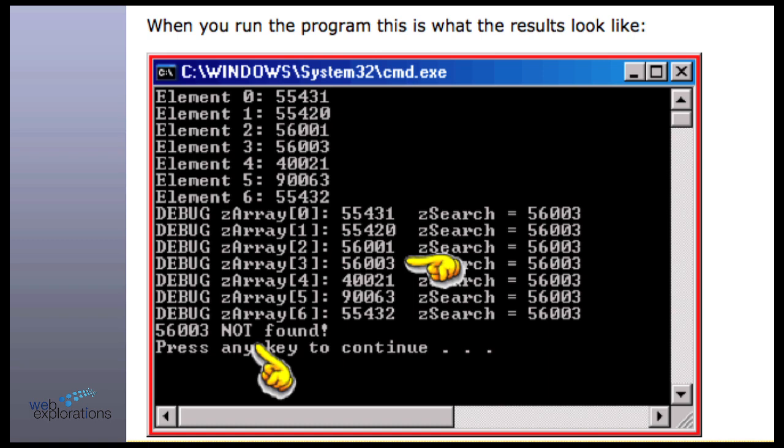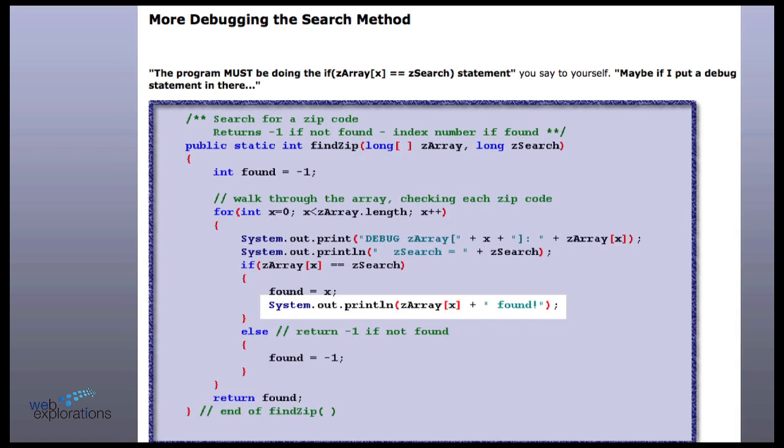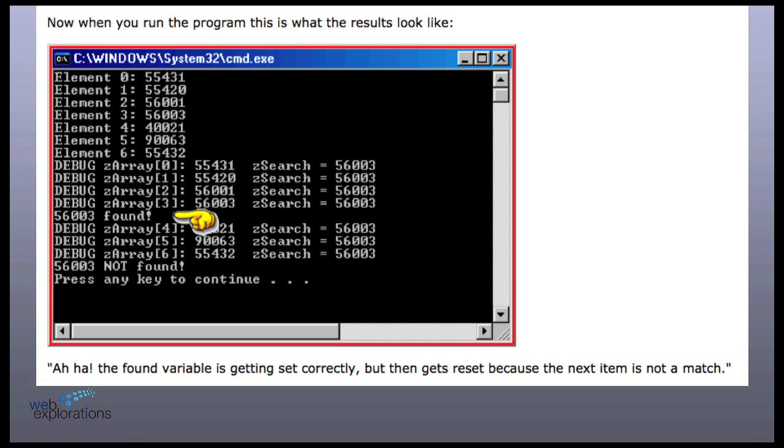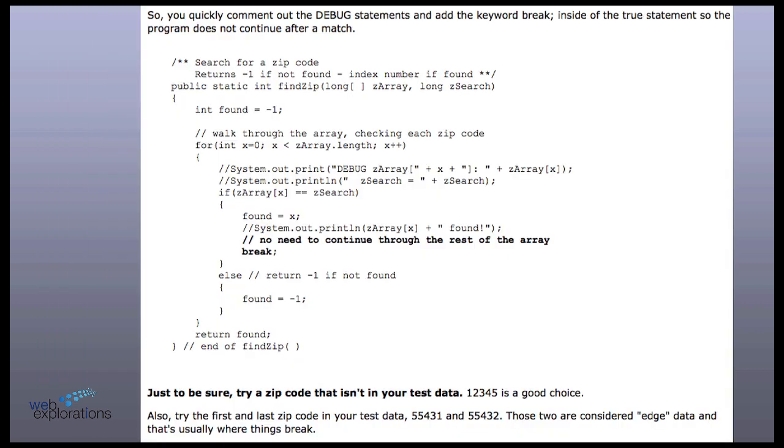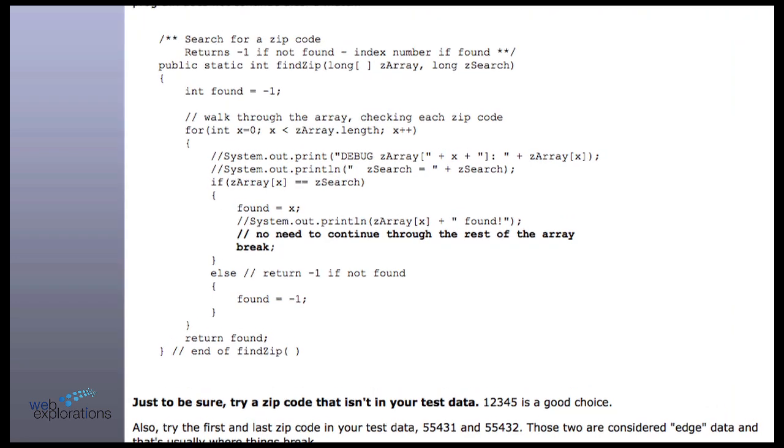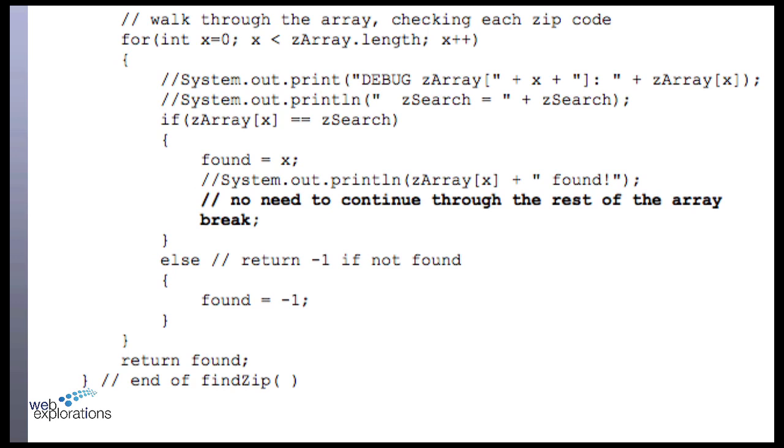Now, again, you could put a break point right here and run the program until you got to this statement. But what I did is I put a println and I said, I found it. So when I ran the code, you can see that I found it. And here's the solution that Kyle came up with already. After you find it, you need to quit looping and tell the program to break.